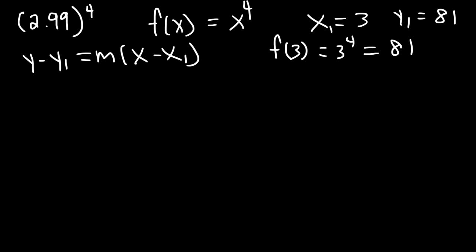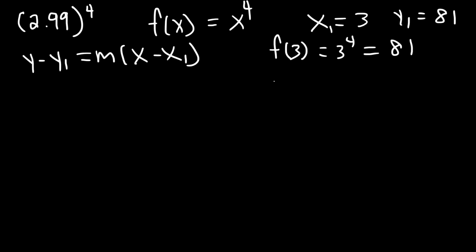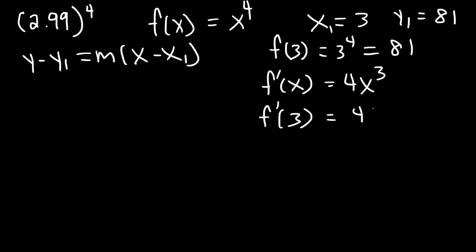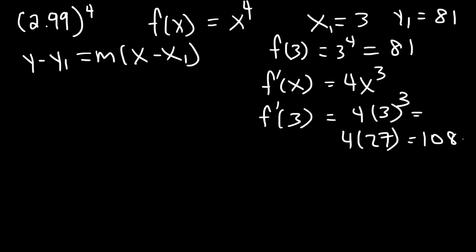Now we need to calculate the slope, which we can find using the first derivative. So f prime of x, using the power rule, is going to be 4x to the third power. So f prime of 3 is 4 times 3 to the third power. 3 to the third is 27, and 27 times 4: 20 times 4 is 80, 4 times 7 is 28, and 80 plus 28 is 108. So this is equal to the slope when x is 3.